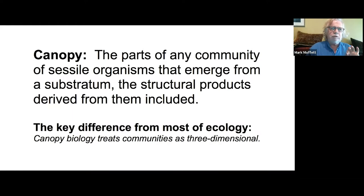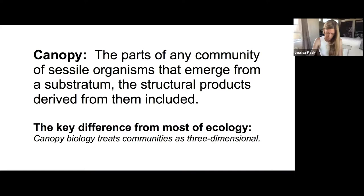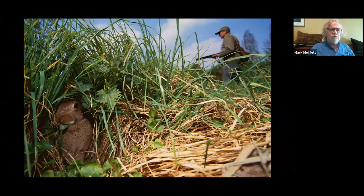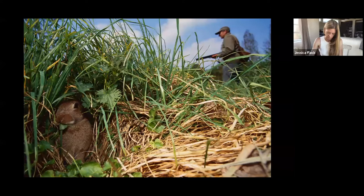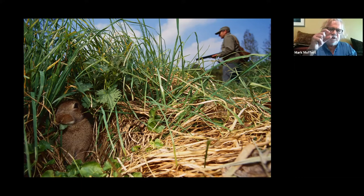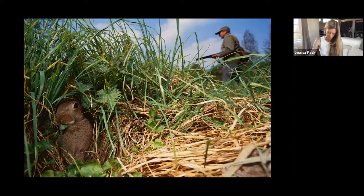I'm going to be defining canopy more broadly than some do: as parts of any community of sessile organisms that emerge from a substratum, structural products derived from them included. What really distinguishes canopy biology as an area of study is that it treats communities as three-dimensional. You can go right down to grasslands and even mowed lawns — Basil Wilson in New Zealand has studied mowed lawns and finds they have multiple layers even if only a couple centimeters thick, with all kinds of complexity compressed within them.